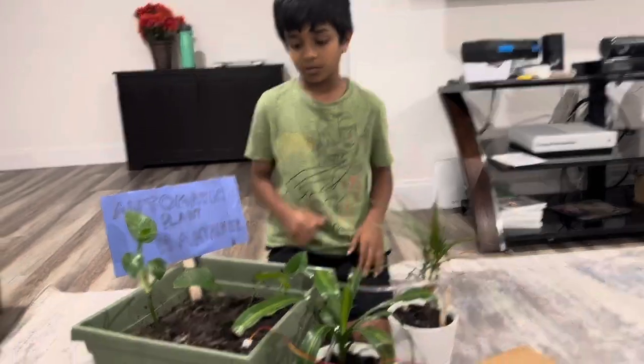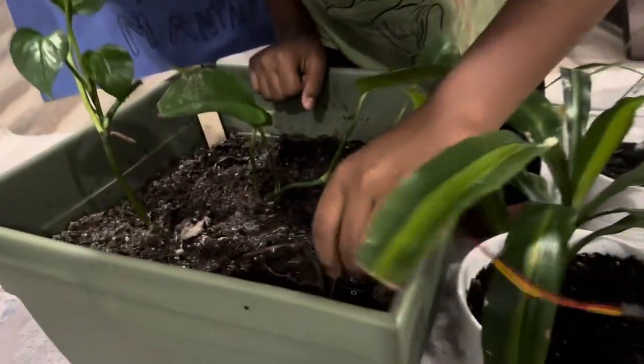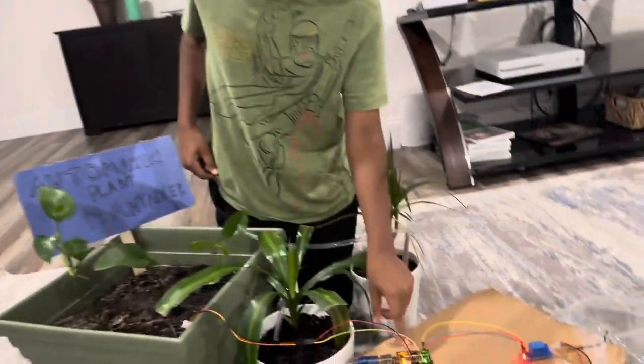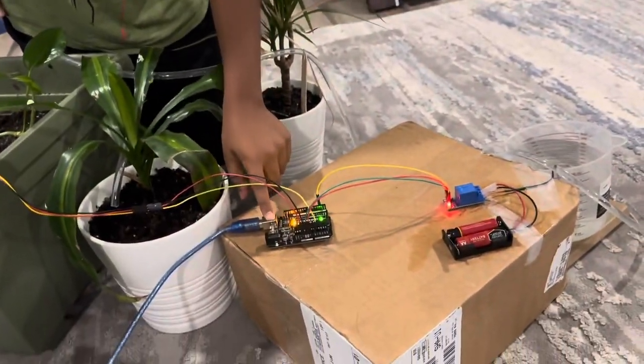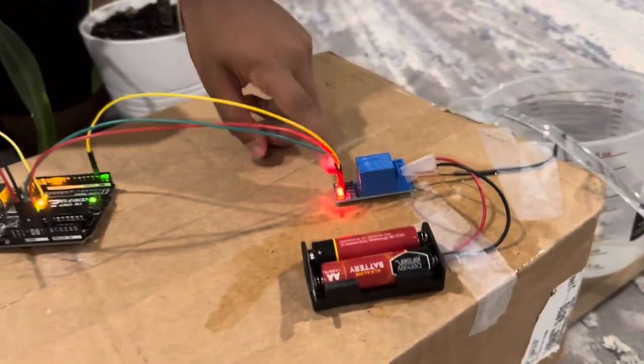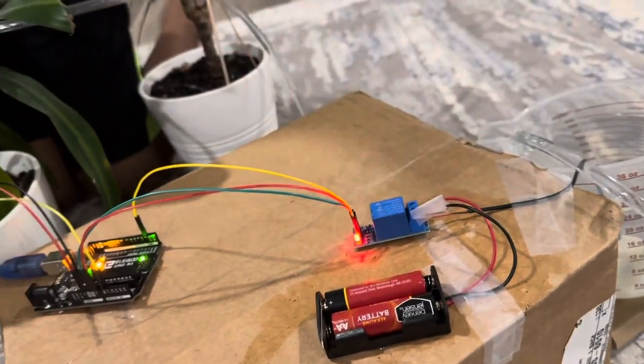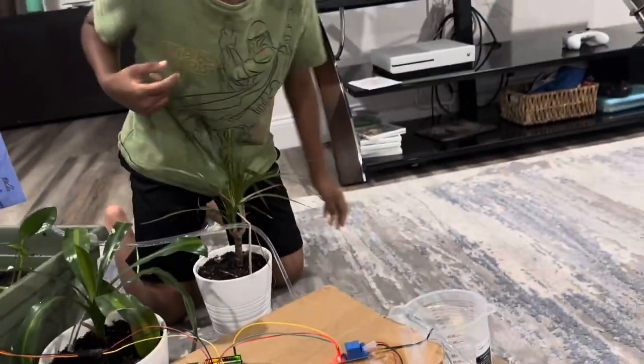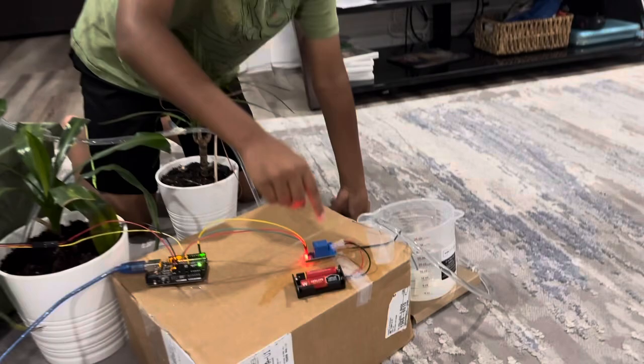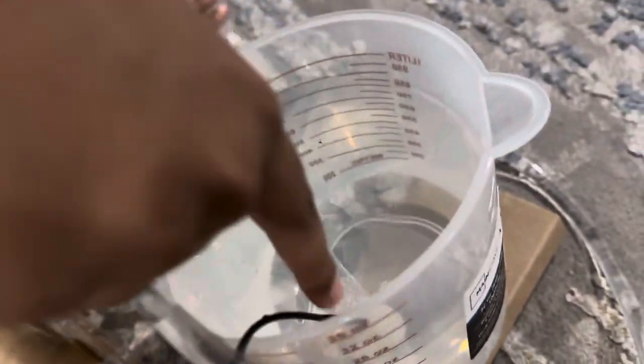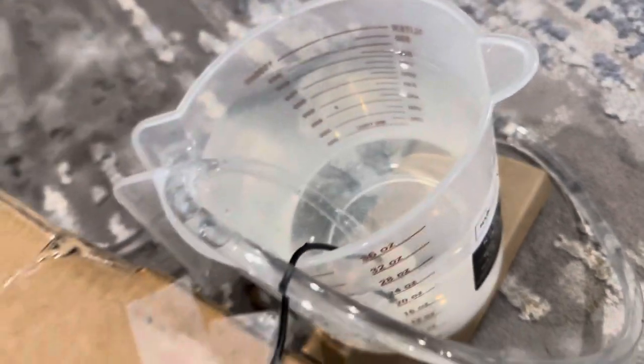This is how it works. So I put a soil moisture sensor here. So if the soil is too dry, it sends a signal to this Arduino Uno and the Arduino Uno sends a signal to this relay module. And the relay module stops the flow of electricity unless it's needed. So this opens the water pump and the water pump pumps water through all these three plants.